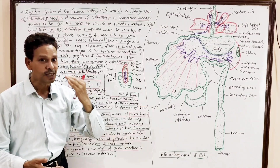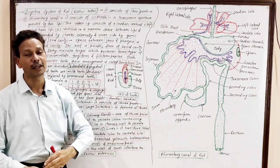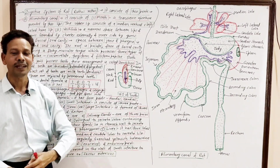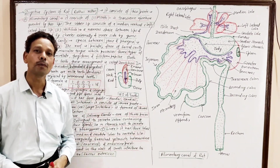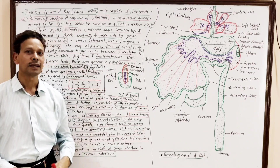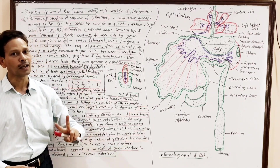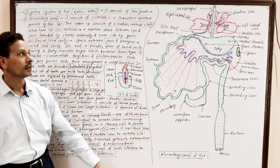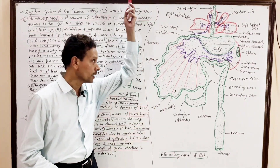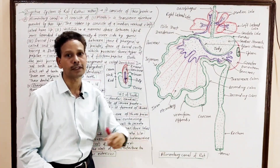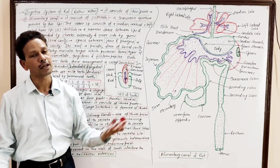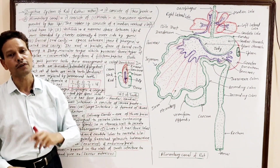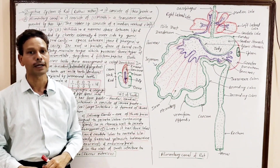The digestive system of RAT, Rattus rattus, consists of two parts: the alimentary canal and digestive glands. The alimentary canal in case of RAT is complete, and it consists of the following parts.